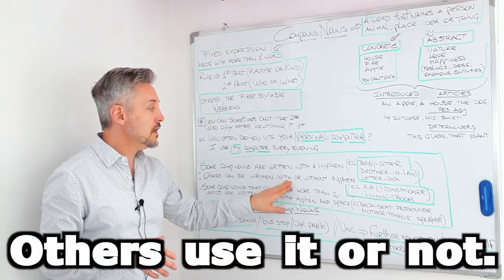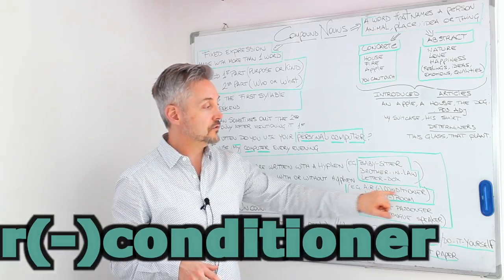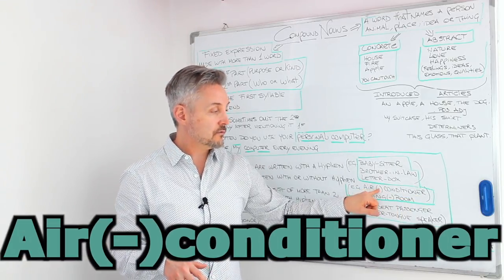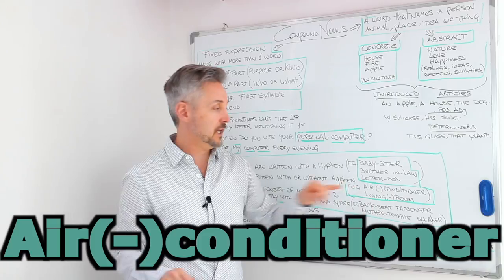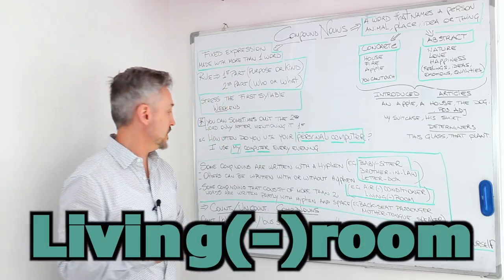Others can be written with or without a hyphen. For example, air conditioner. You can write a hyphen or you can omit it. Living room. With or without the hyphen.